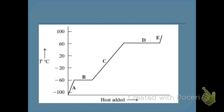Whenever potential energy changes, it flatlines. So where it flatlines is where it's melting and where it's boiling or evaporating. Looking carefully at the graph, the melting point is negative 60 degrees Celsius and the boiling or evaporation point is 60 degrees Celsius. It's kind of unusual to have such a low melting point — at room temperature, this substance would be a liquid.